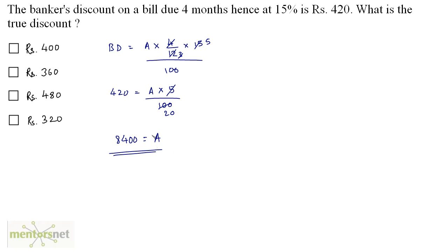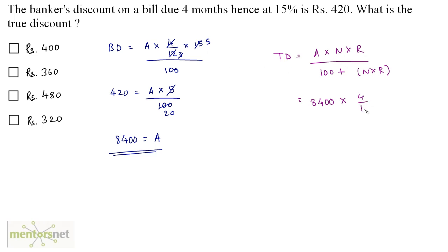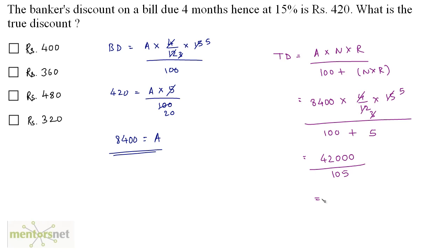Now we have the amount. We can calculate the true discount using the formula: True discount equals A × N × R / (100 + N × R). So this is 8400 × (4/12) × 15, divided by (100 + 5). Simplifying: 4 × 3 = 12, 3 × 5 = 15, giving 8400 × 5 = 42,000 divided by 105, which equals Rs. 400. So the true discount is Rs. 400 and option A is the correct answer.